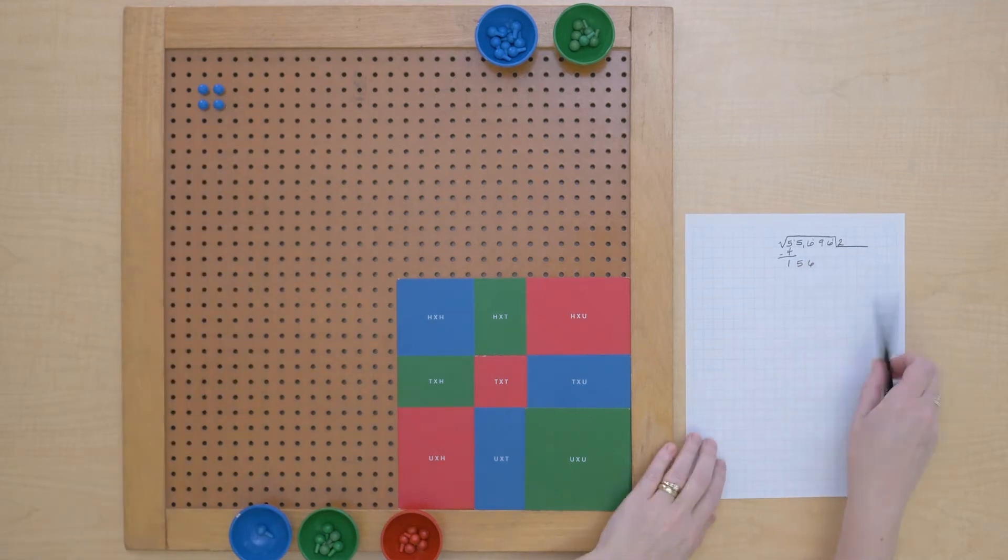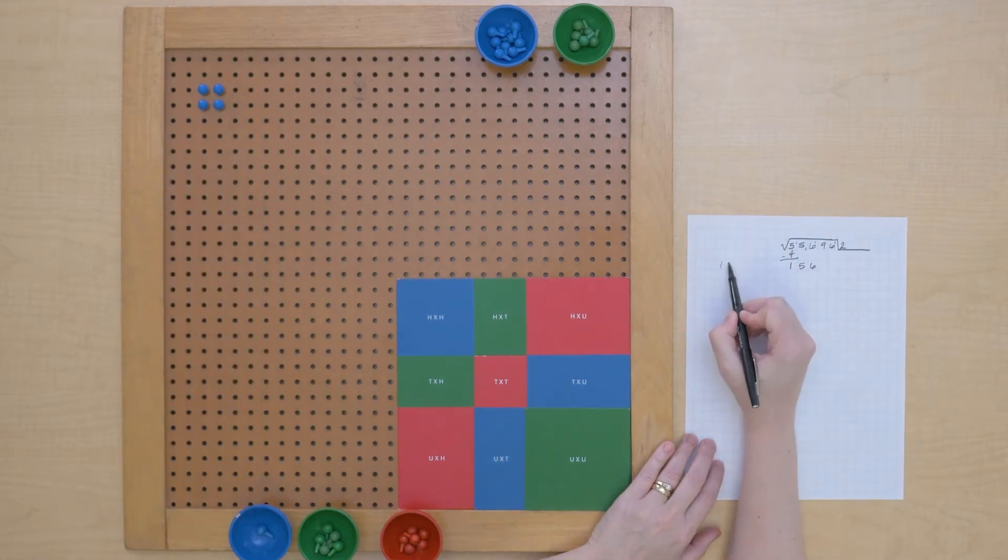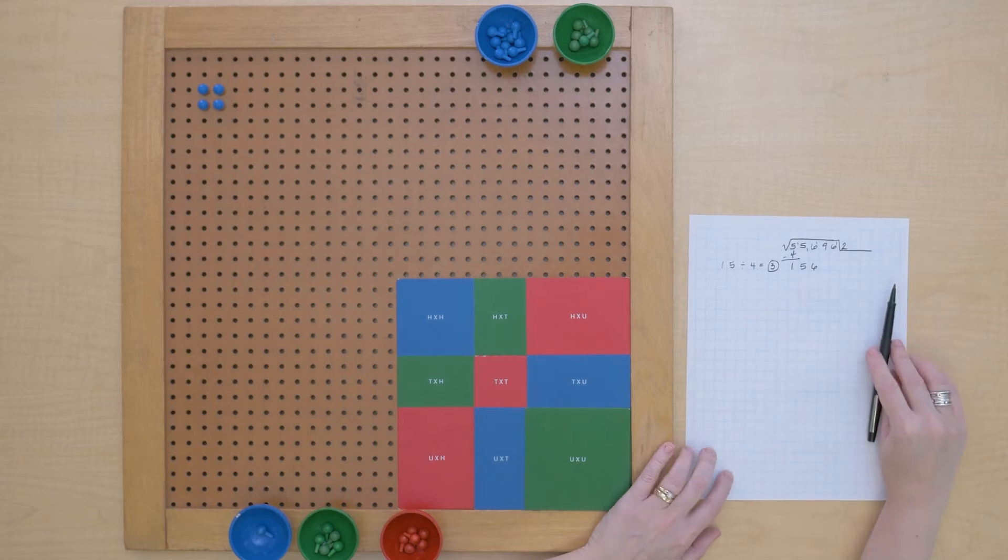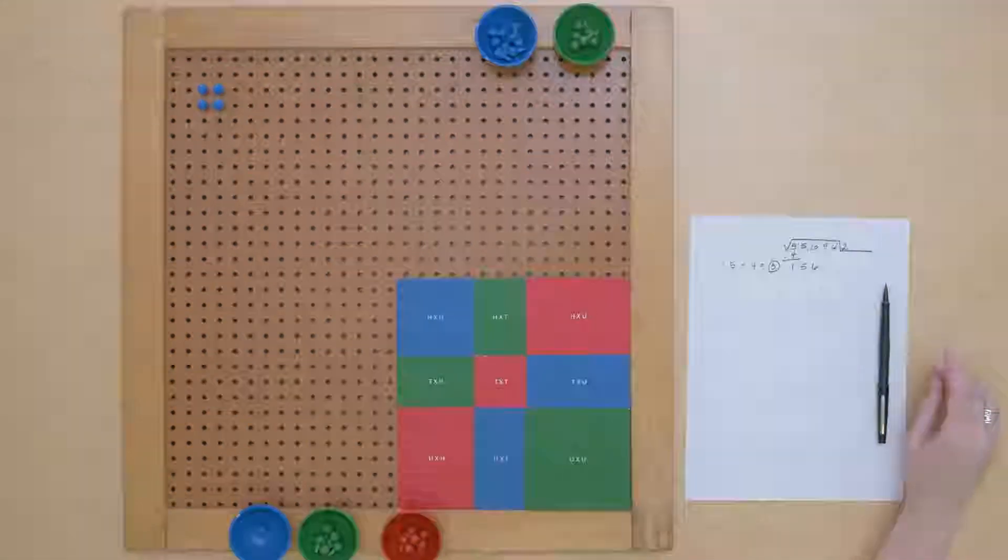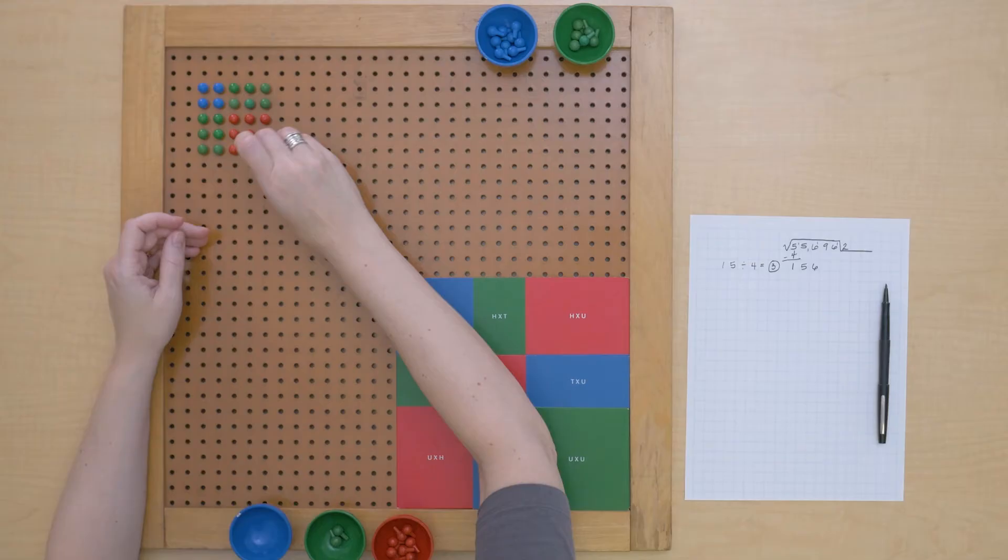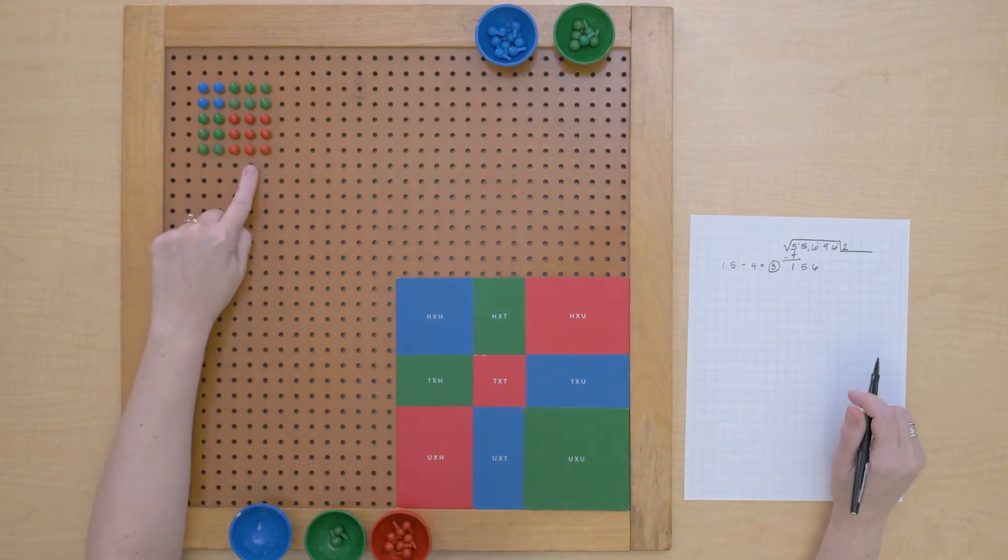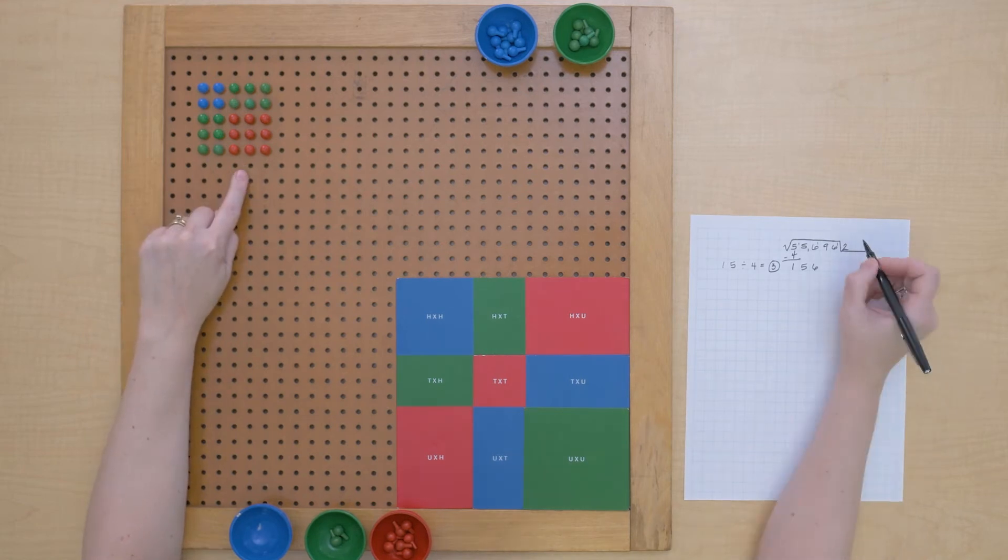We'll use four for each layer so that'll be 15 divided by 4 which equals 3 with a little bit left over, so 3 is my trial root digit. Let's see if we're right—that's all I can build so it looks like we were right, we were able to build a square of 3 so we can put that in the root, it's our second root digit.